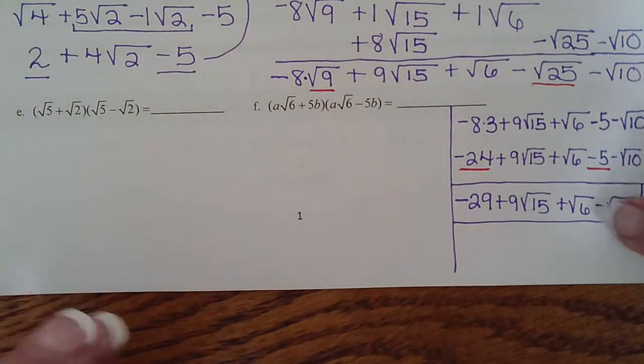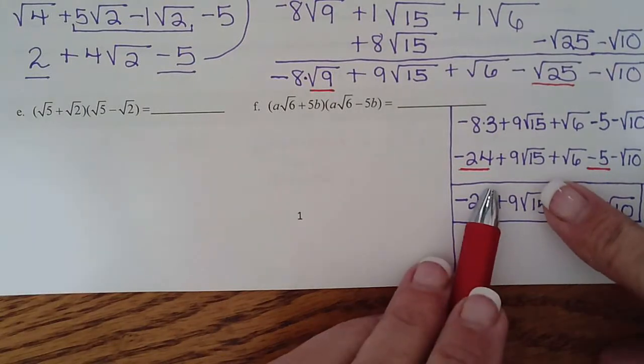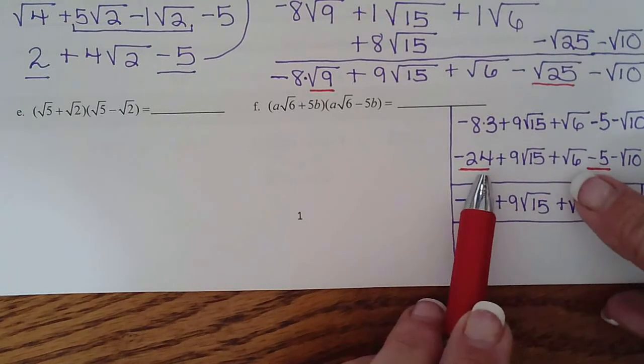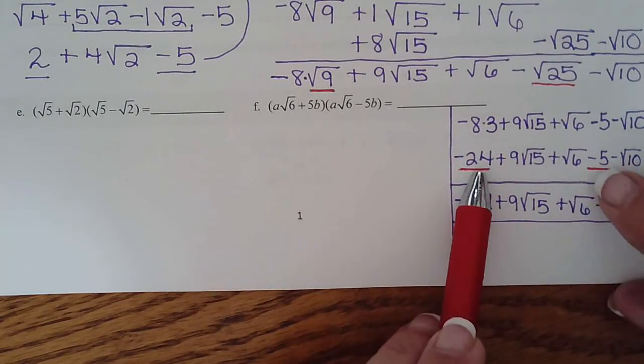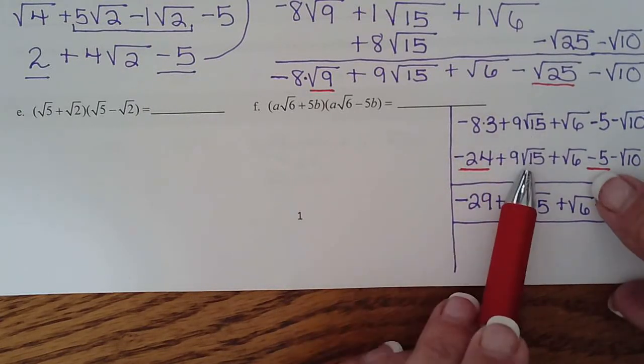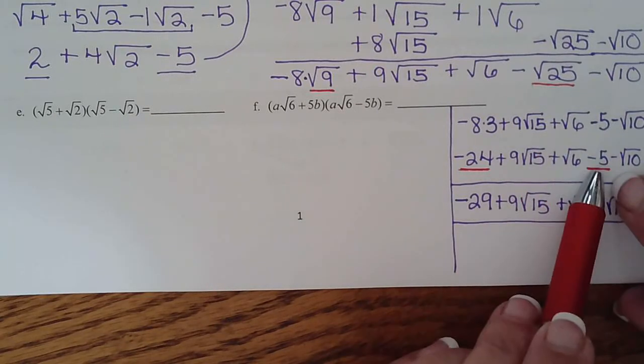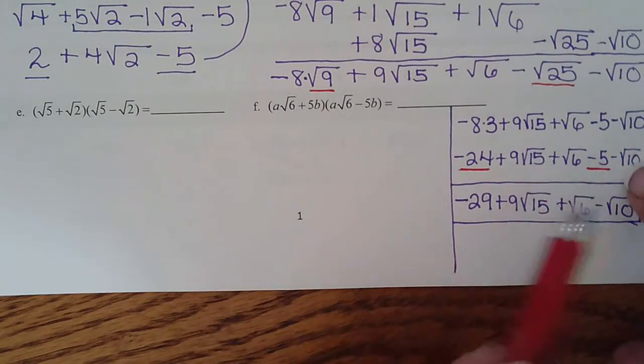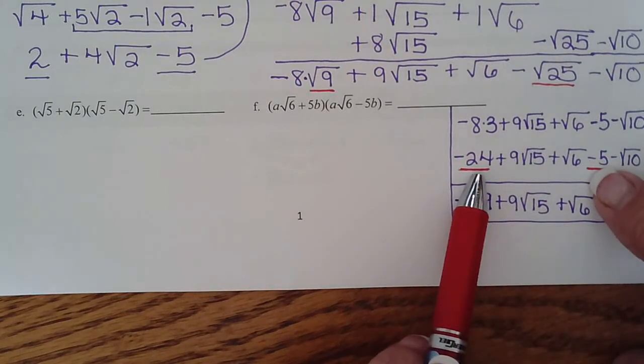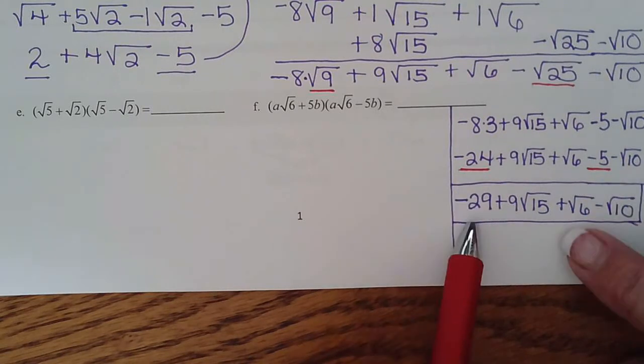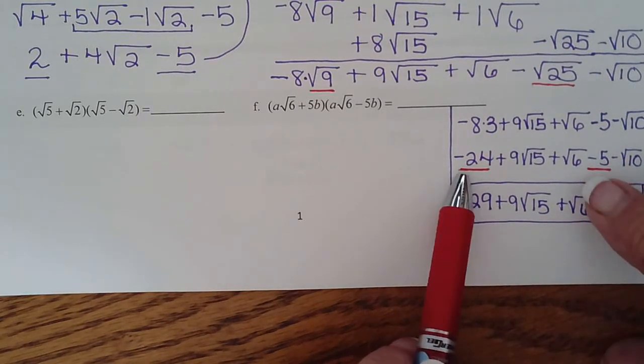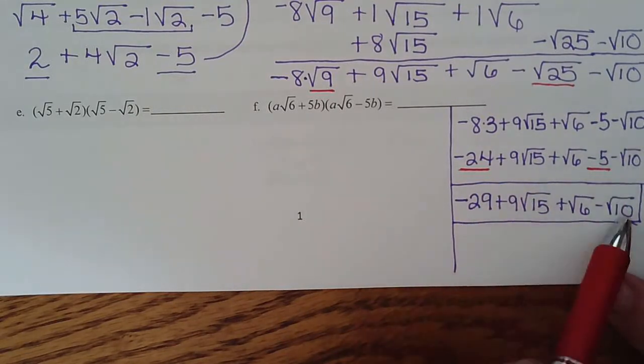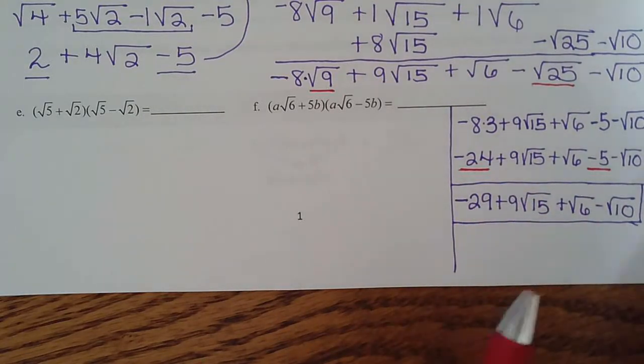On our last video we were just finishing up problem 1D. Let's go over that last step. We turned this into negative 24, brought everything else down. These radicals can't be simplified, none of them have pairs, but we do have some like terms. So negative 24 plus negative 5 gives us negative 29, and then I tacked on the rest of the problem. That will be our final answer.